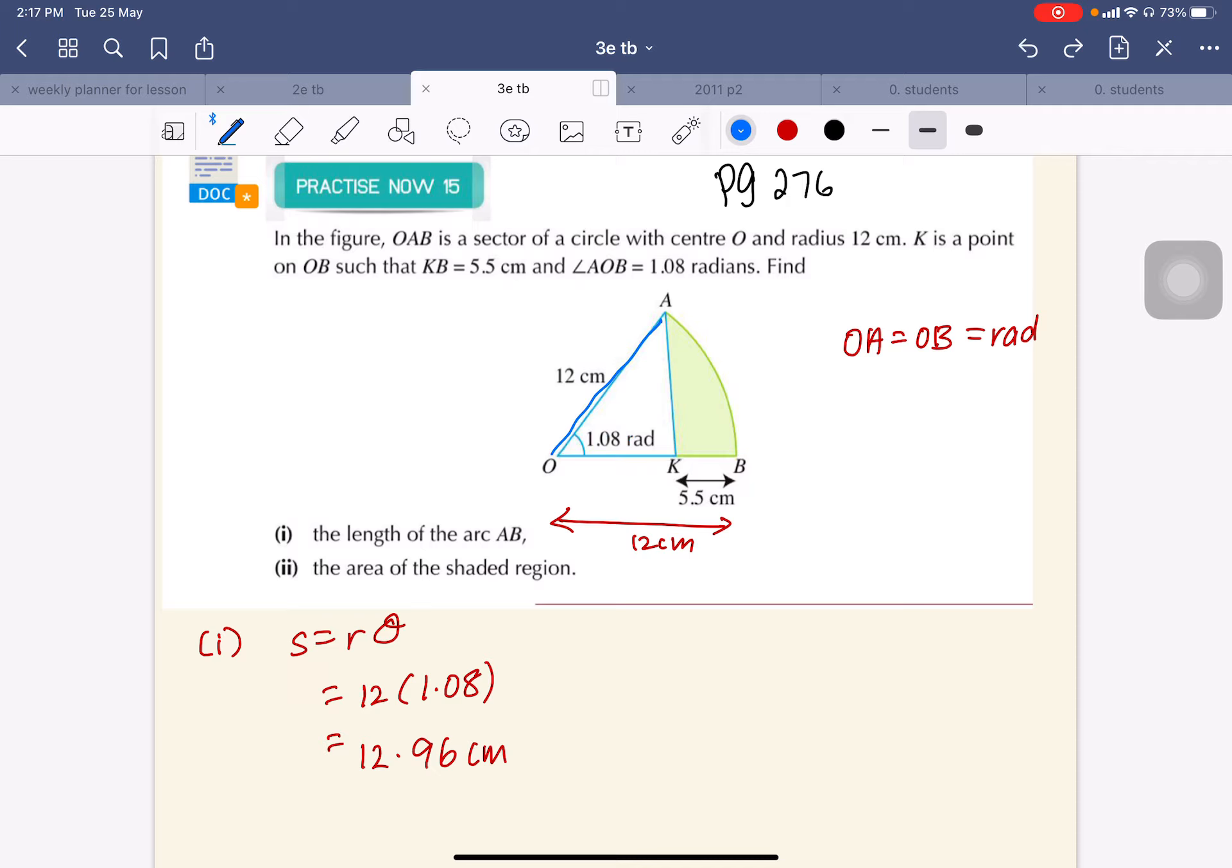Now, I don't know how many of you will think that this is a right angle triangle, but please do not assume unless the question says so. Therefore, this is not a right angle triangle. So to find the area of the shaded region, I will find the area of the sector first.